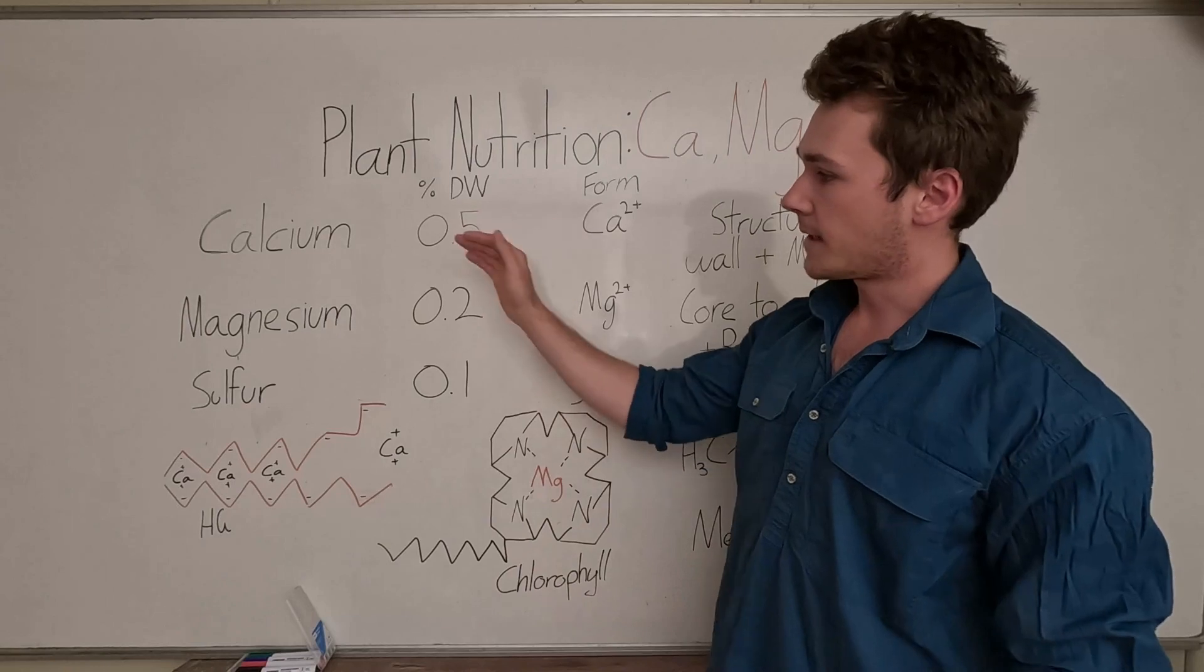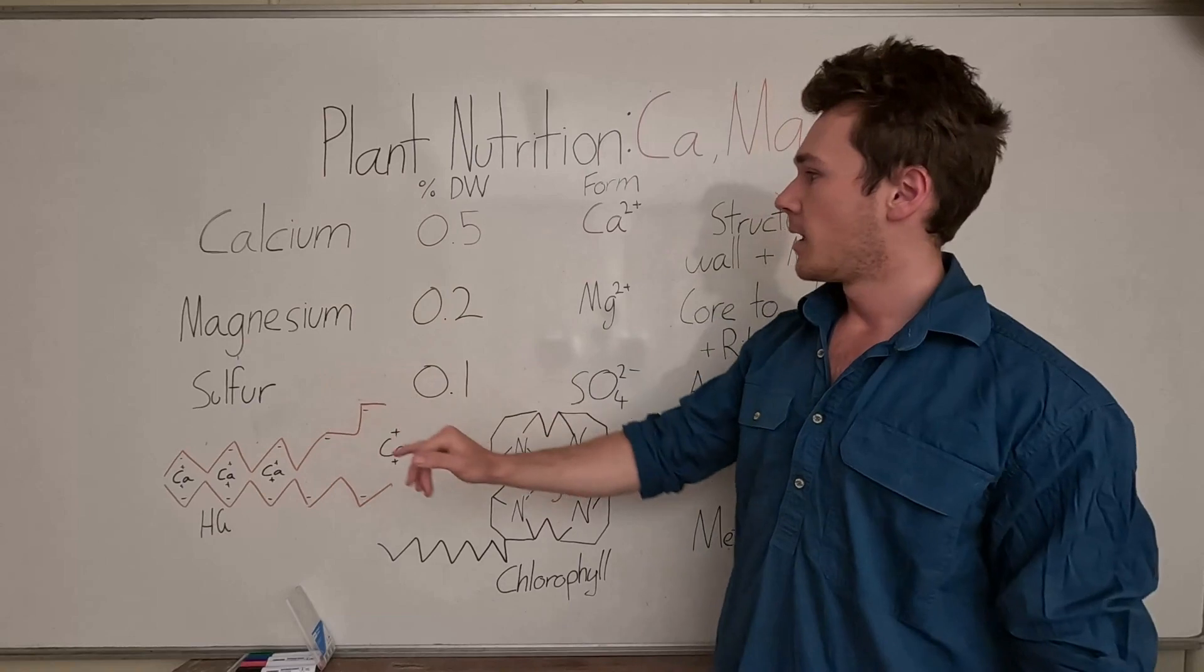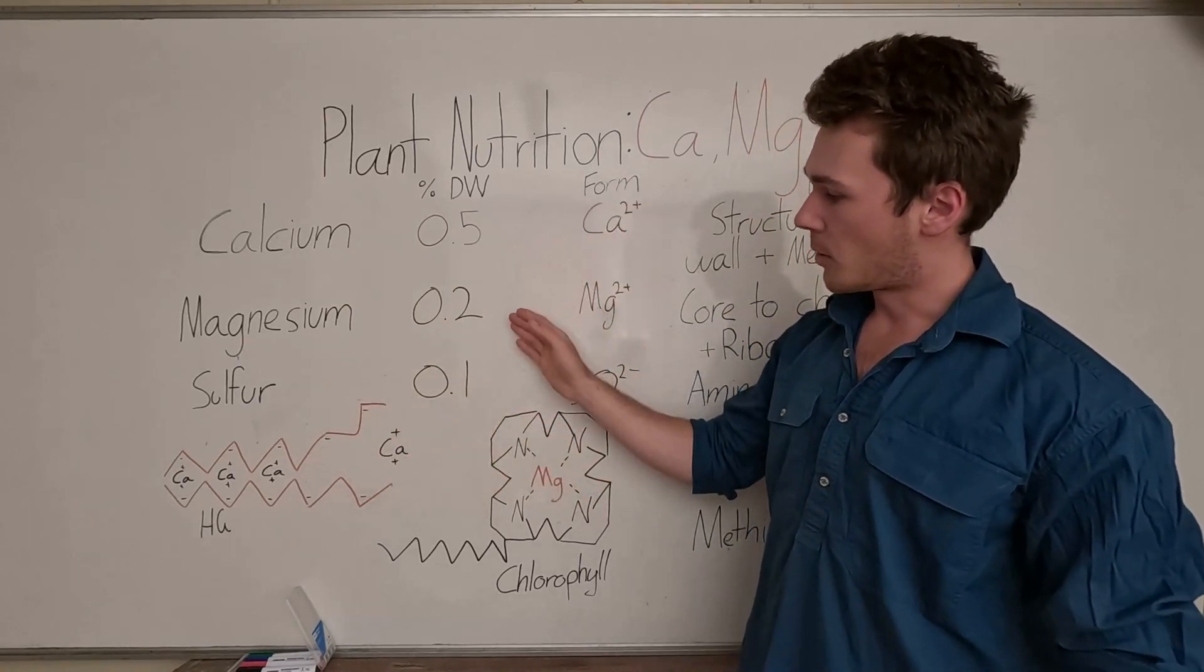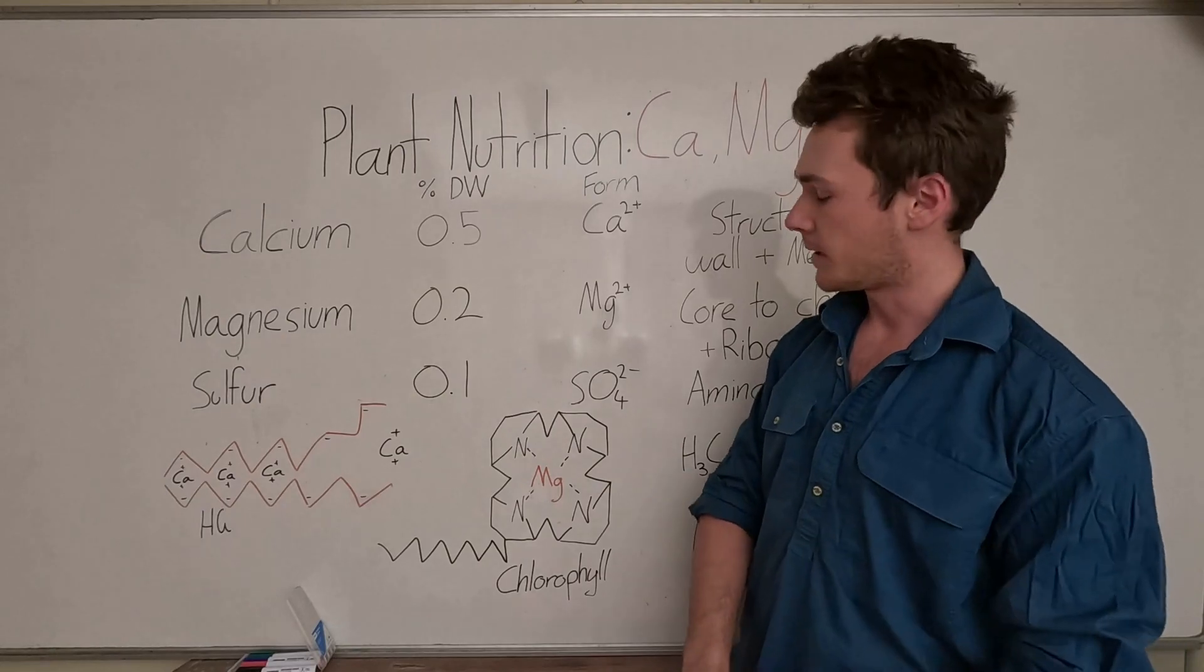So we have calcium, magnesium, and sulfur. So Ca, Mg, and S. They make up 0.5, 0.2, and 0.1% of our plant.